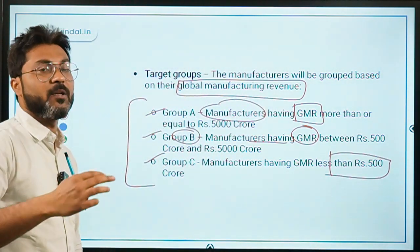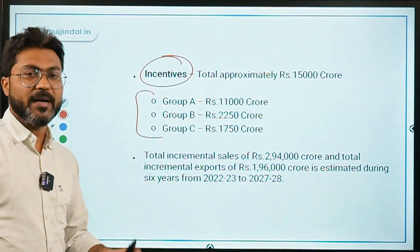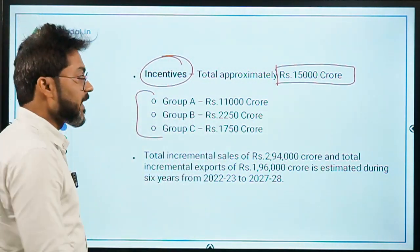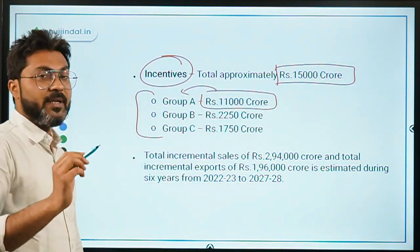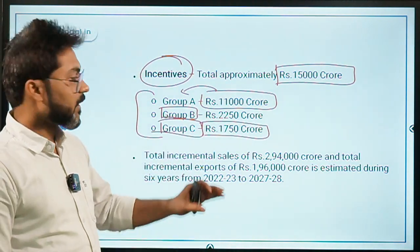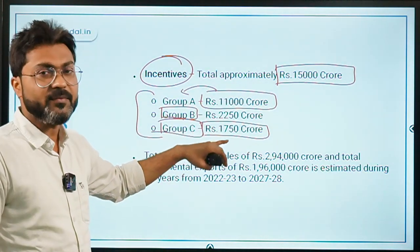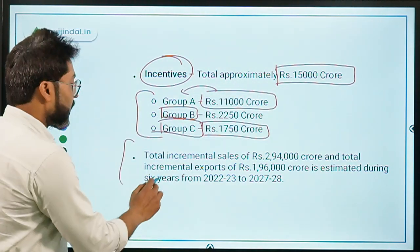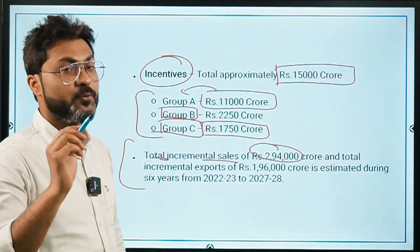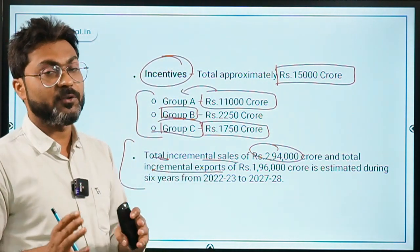The total incentives under this scheme are approximately ₹15,000 crores. Out of this, ₹11,000 crores will go to Group A, ₹2,250 crores to Group B, and ₹1,750 crores to Group C. The total incremental sale expected is ₹2,94,000 crores and total incremental export expected is ₹1,96,000 crores.